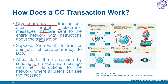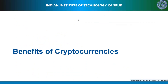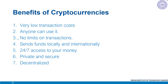To summarize: in this video we saw with the help of a simple example how a cryptocurrency transaction works using distributed ledger technology, that is the blockchain. In the next video, we will discuss the benefits of cryptocurrencies that have led to their widespread adoption.